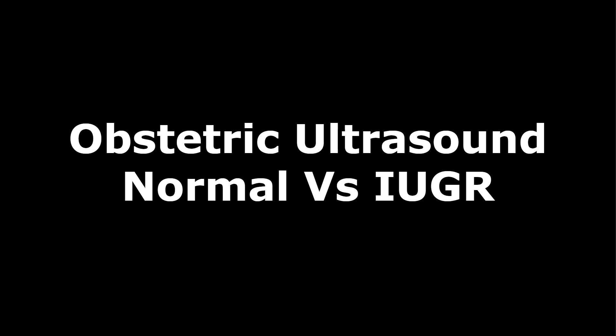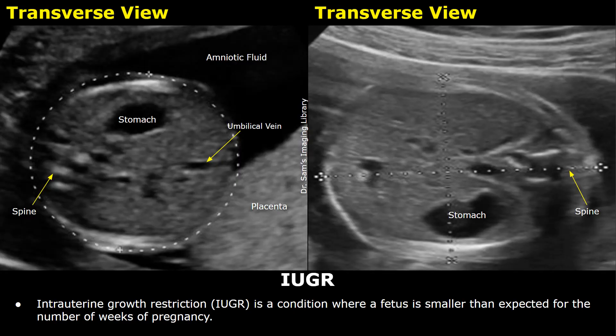Hello everyone, this is Dr. Sam and this video is about intrauterine growth restriction. Intrauterine growth restriction, or IUGR, is a condition in which the fetus is smaller than expected at the gestational age. It indicates that the fetus is not growing properly and is detected using ultrasound.